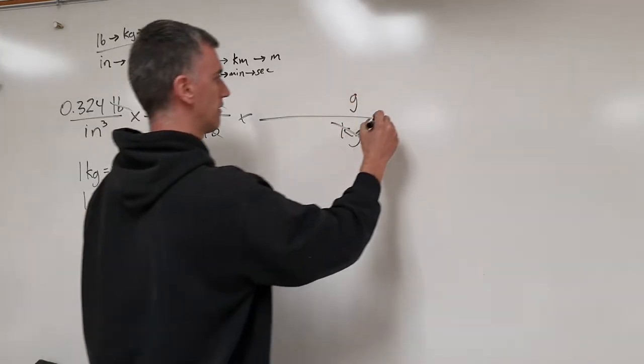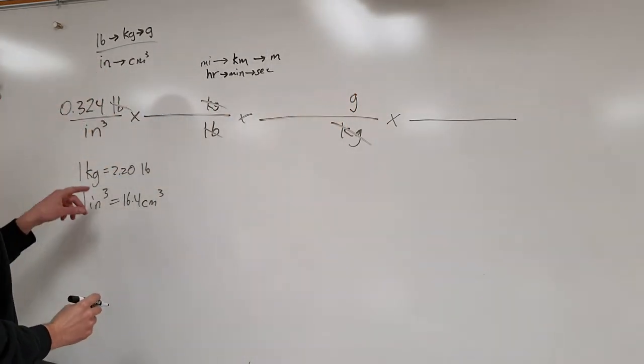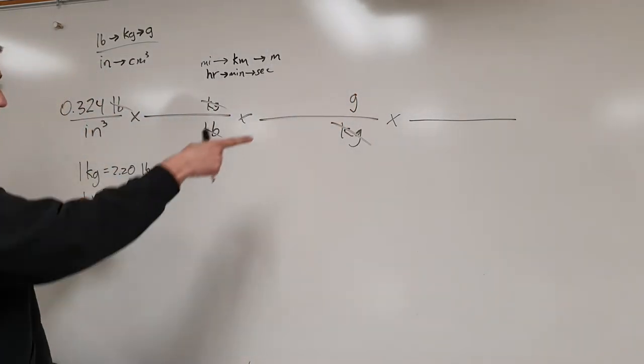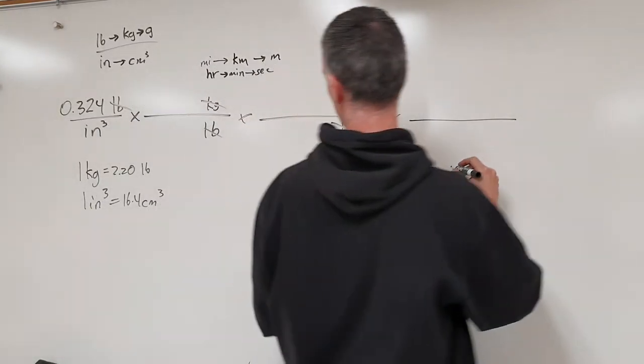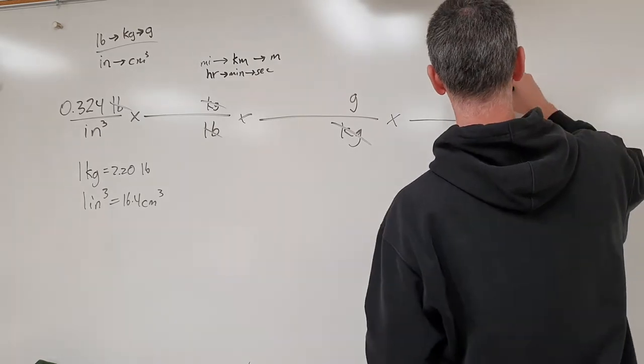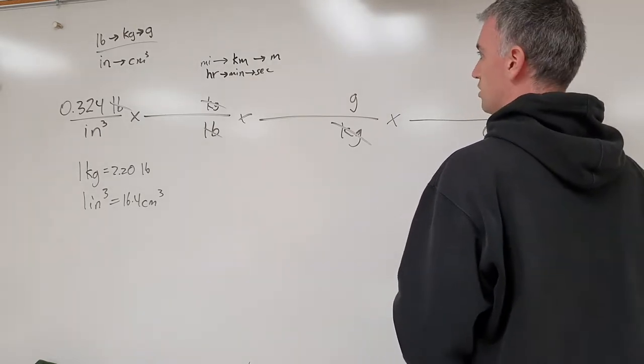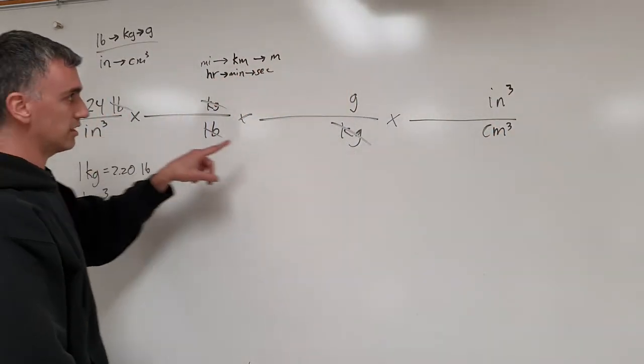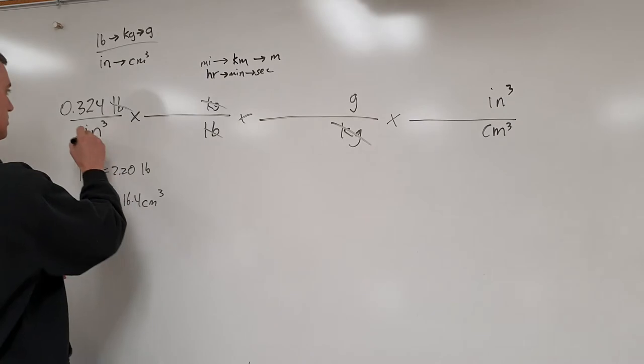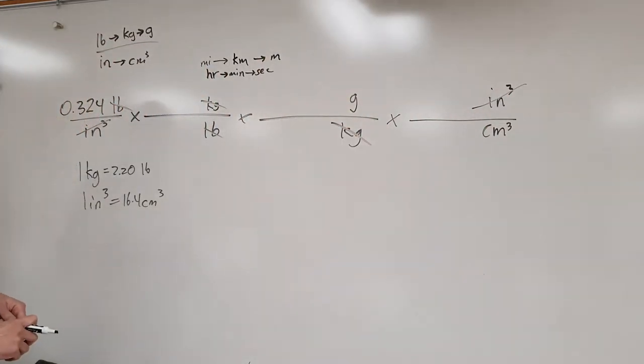This will let me have grams on top. I want grams on top. I want centimeters cubed on the bottom. Pound cancel pound. Kilogram cancel kilogram. Gram on top. That's good. Now, for inches. Inches to cubic centimeters. So we can simply do that. Inches cubed is on bottom. Cubic centimeters will go on bottom because if inches cubed on bottom there, then it needs to be on top here so that it can cancel. And so, we are left with grams on top and cubic centimeters on bottom.